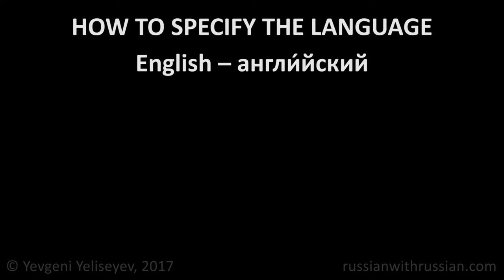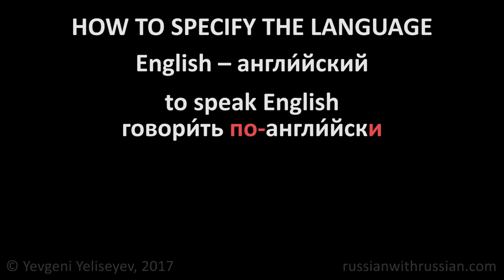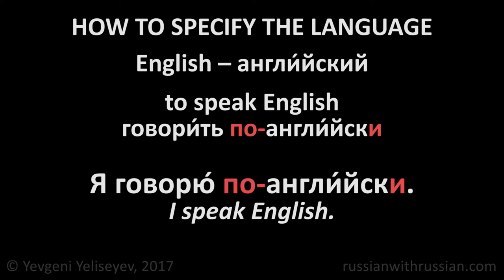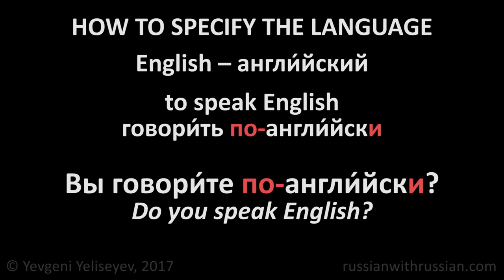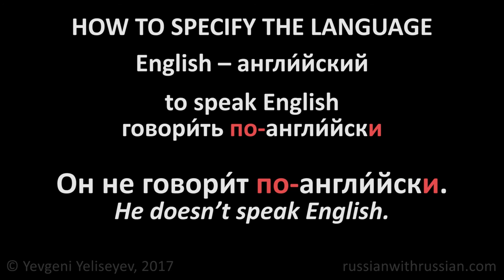For example, English is английский, so to speak English is говорить по-английски. Я говорю по-английски — I speak English. Вы говорите по-английски? — Do you speak English? Он не говорит по-английски — he doesn't speak English.